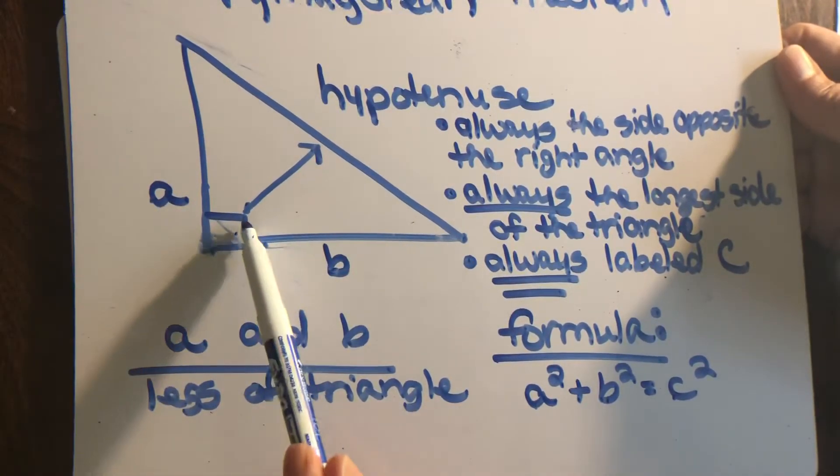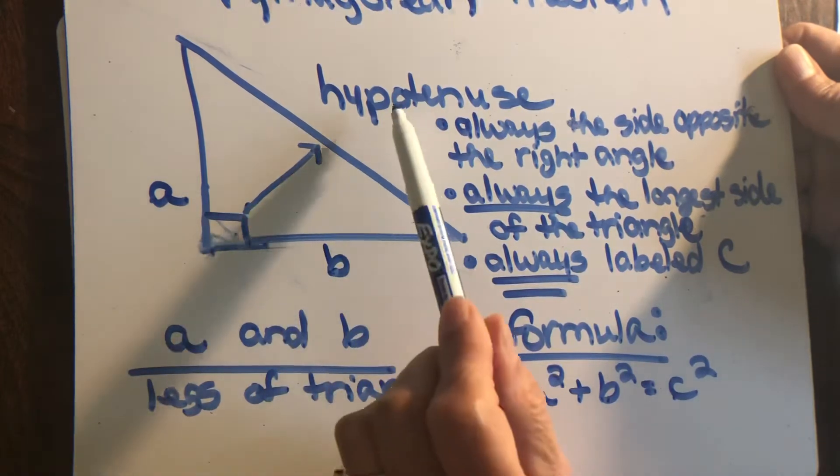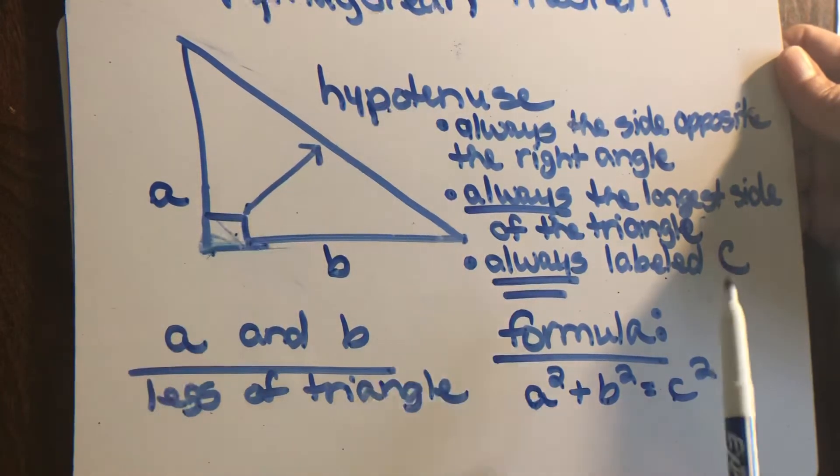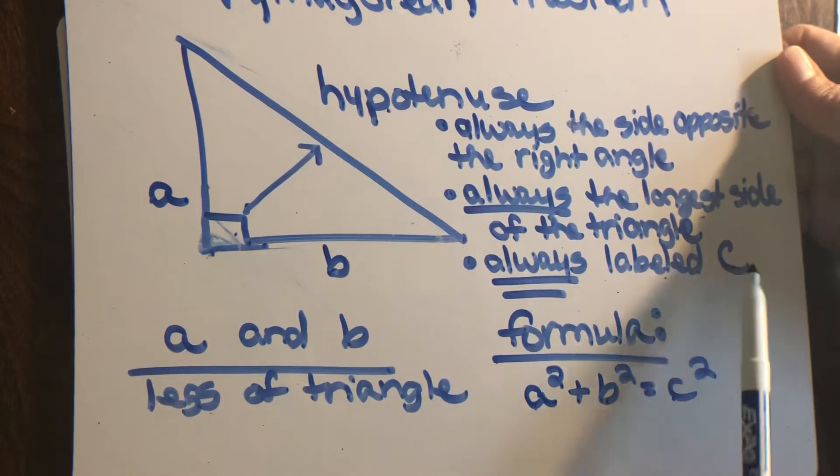Remember, the opposite side to the right angle is always the hypotenuse, and it's always labeled C. A and B, it doesn't matter, and those are called the legs.